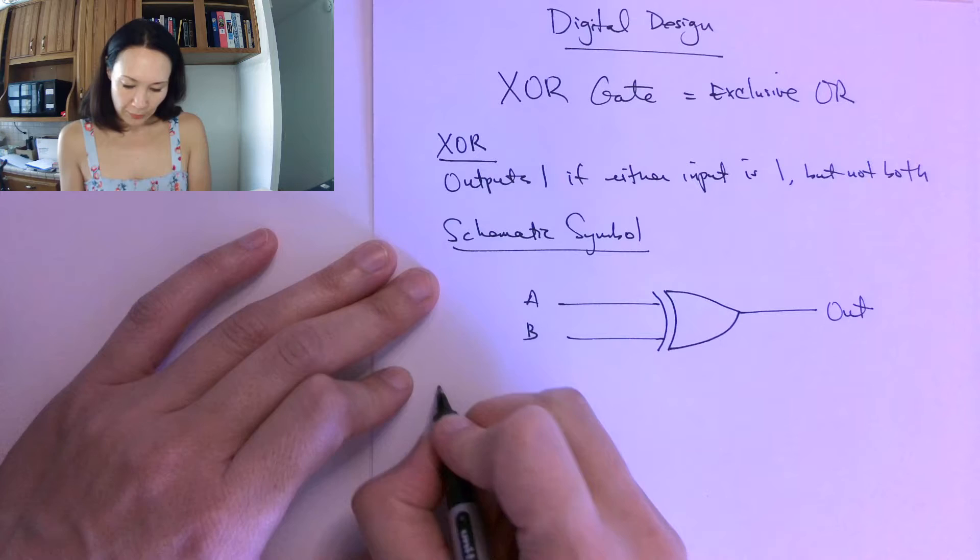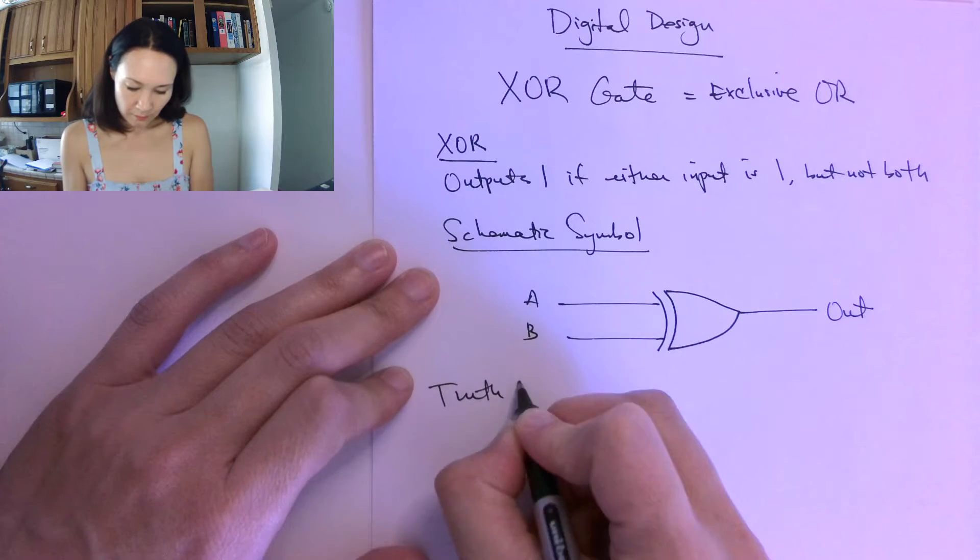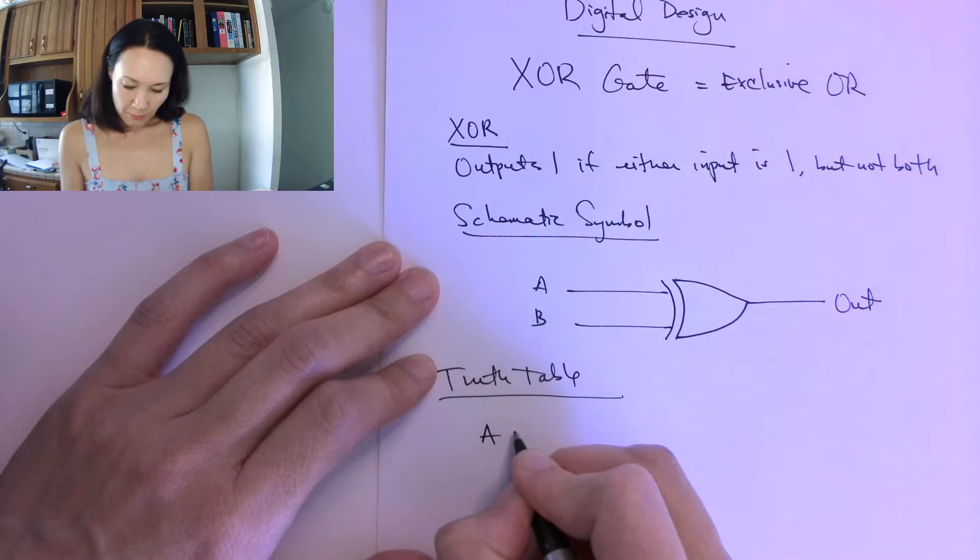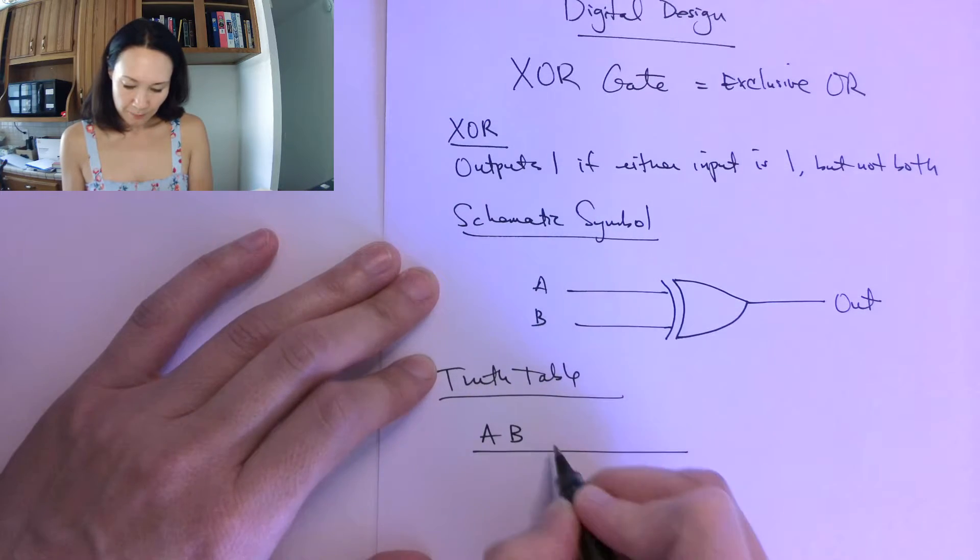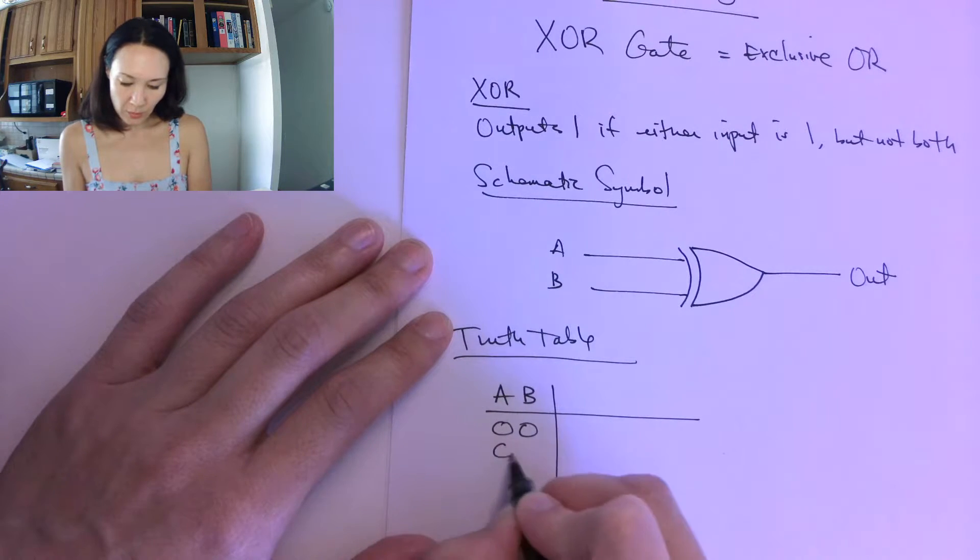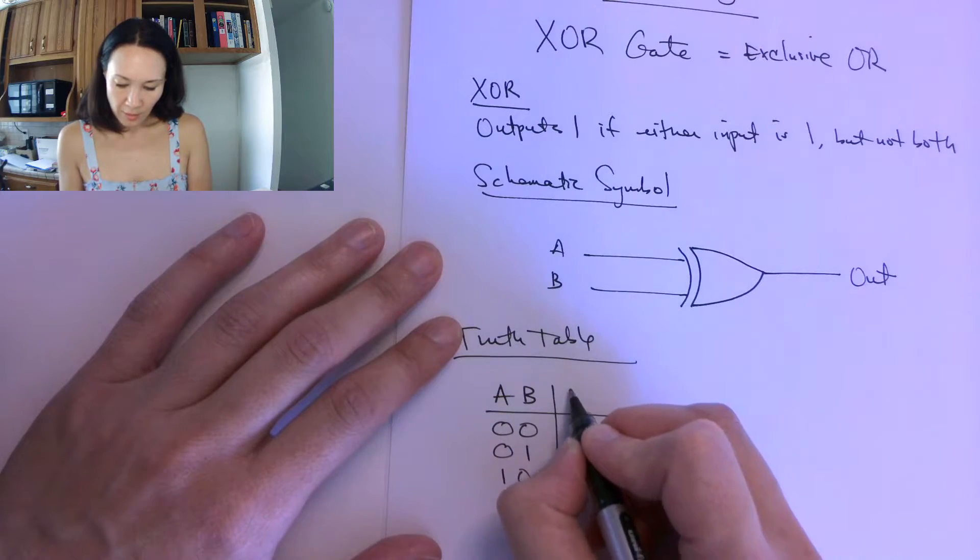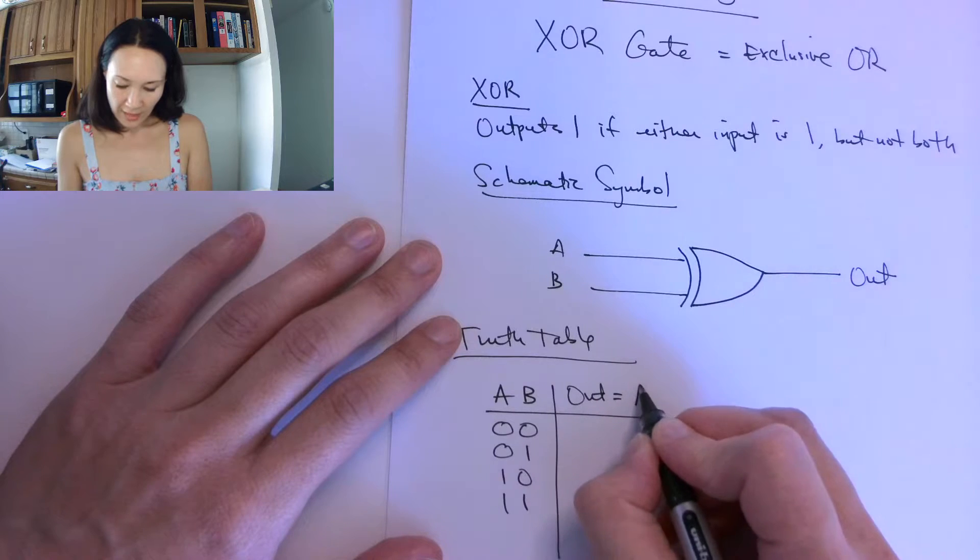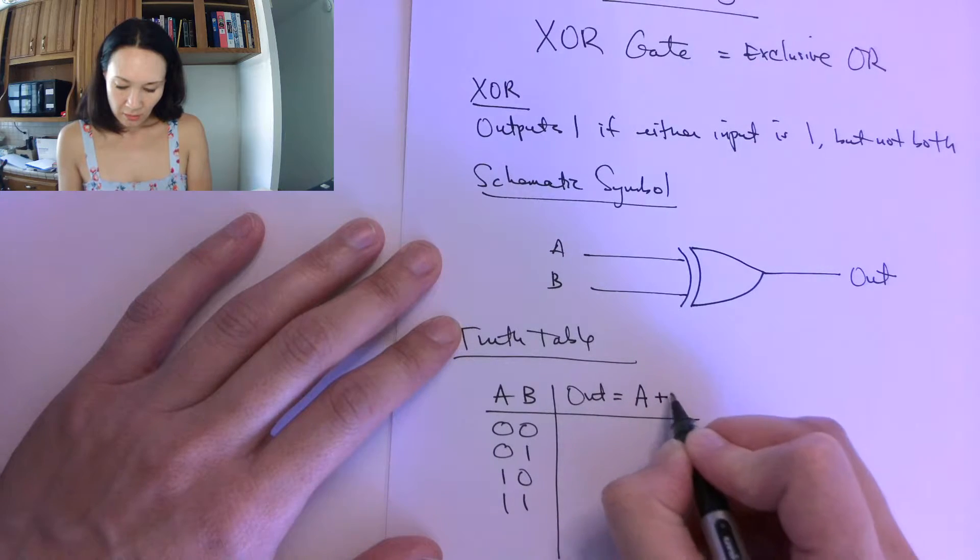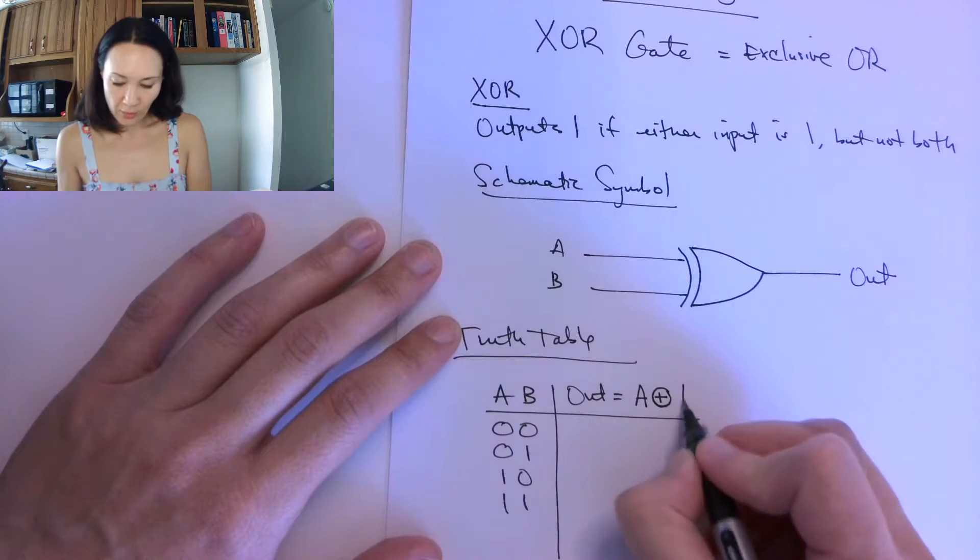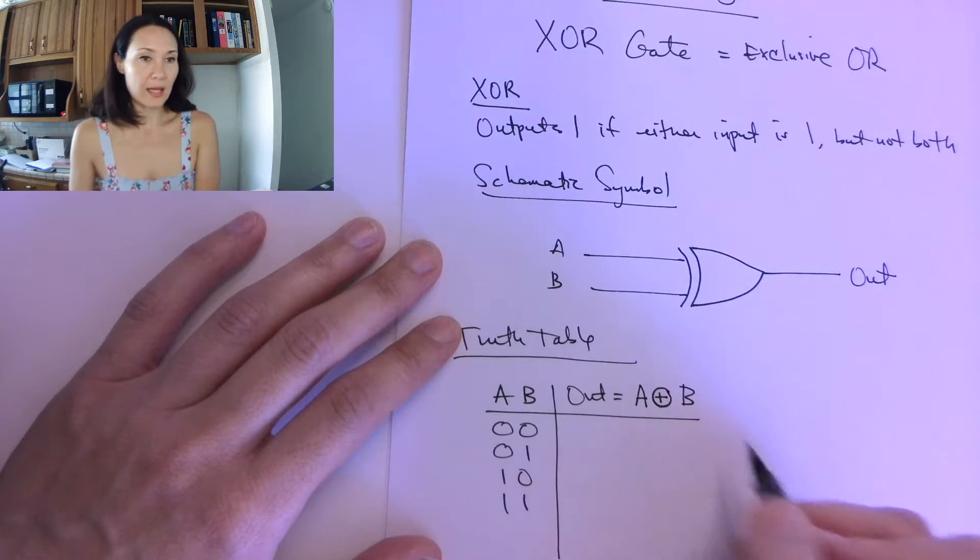The truth table: if we have inputs A and B, to cycle through all the combinations of inputs, we will just count up in binary. Then our output is the symbol for XOR, the algebraic symbol, is this plus with a circle around it. So this reads as A XOR B.